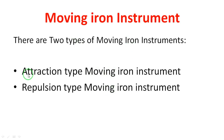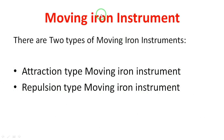Moving iron instruments have two types: attraction type moving iron instrument and repulsion type moving iron instrument. In both, an iron piece is involved — that is why we call it a moving iron instrument, because the iron piece is the moving part. Now coming to the first part: the attraction type moving iron instrument.